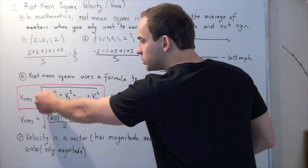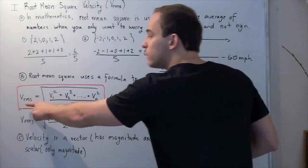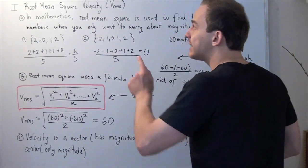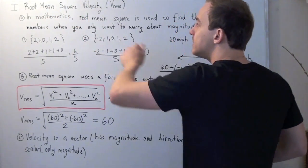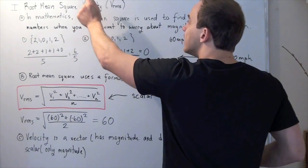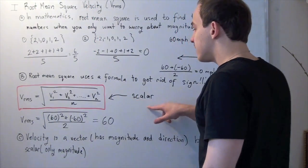Because when we take the square root, we can't get a negative. So we always get positive. So V RMS is not the velocity, it's the root mean square speed. Because our velocity, this guy, is actually our speed. It only has magnitude. So this is a scalar.